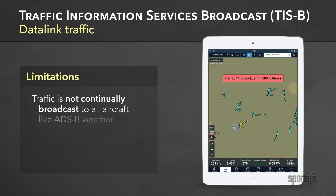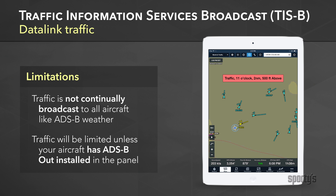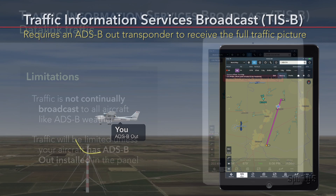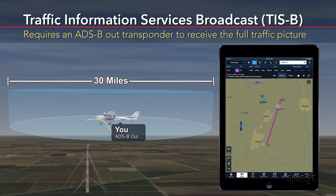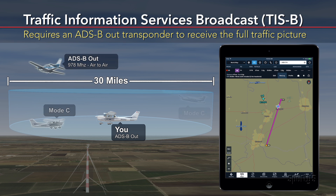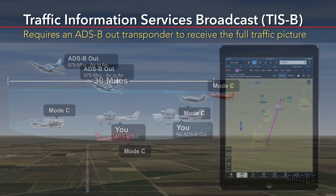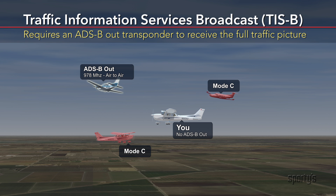Unlike ADS-B weather, which is broadcast to anyone in range of the ground stations, ADS-B traffic is a custom report that is only sent to aircraft with ADS-B Out. If you're flying with an ADS-B Out transmitter in your airplane, you'll get an excellent picture of all traffic within roughly 30 miles of your position. But if you're not flying with an ADS-B Out transmitter — say with only a portable ADS-B In receiver — TISB is fairly unreliable.